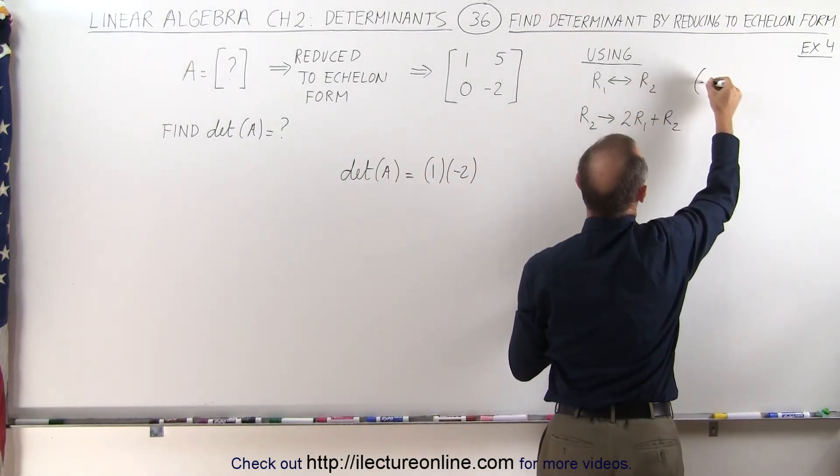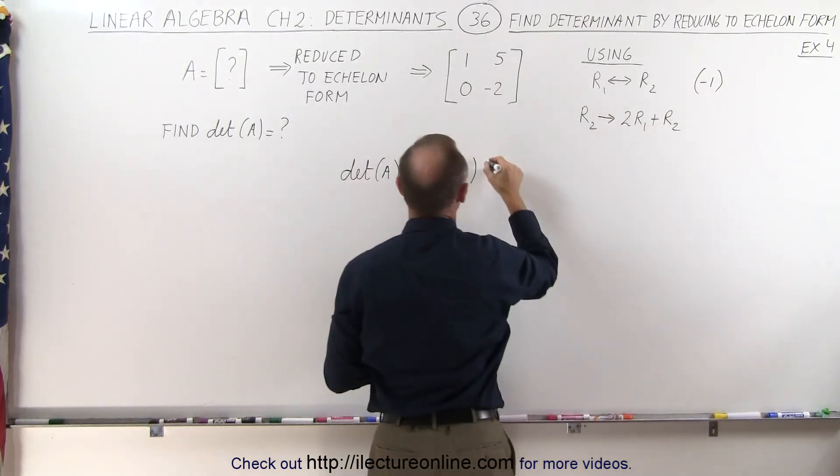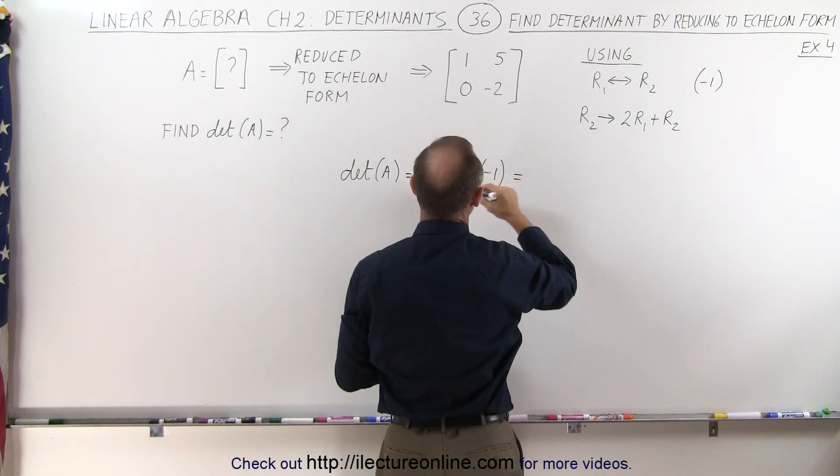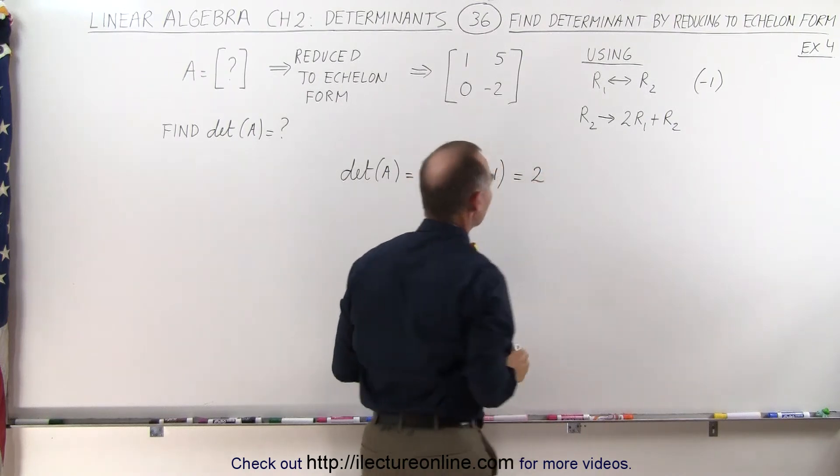So here we're going to have a multiplication of a negative 1, which goes over here, and nothing else, and therefore the determinant in this case is equal to 2.